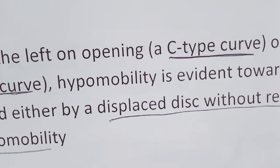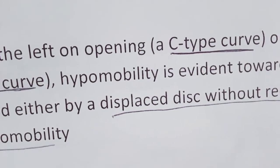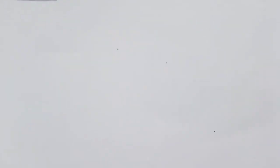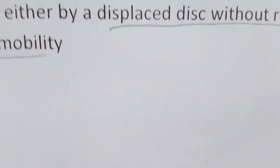If deviation occurs to the left on opening, a C-curve is seen; to the right, a reverse C-type curve. Hypermobility is evident toward the side of the deviation, caused either by displaced disc without reduction or unilateral muscle hypomobility.